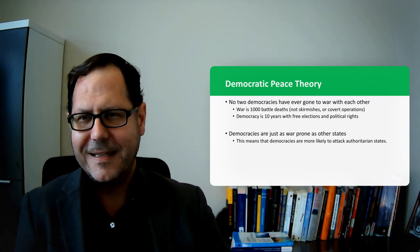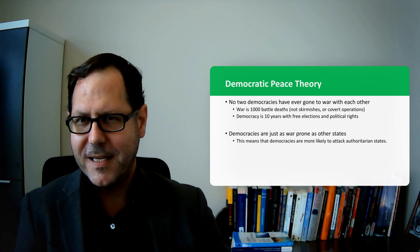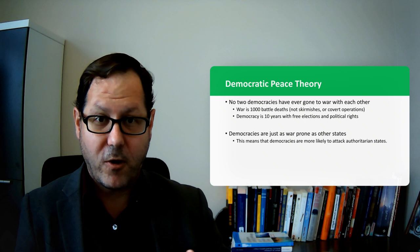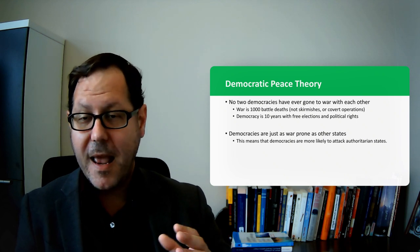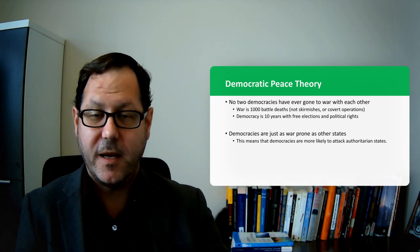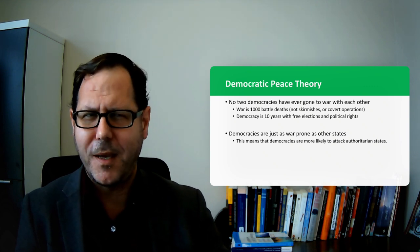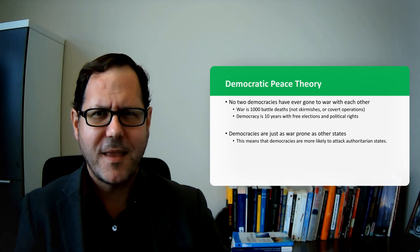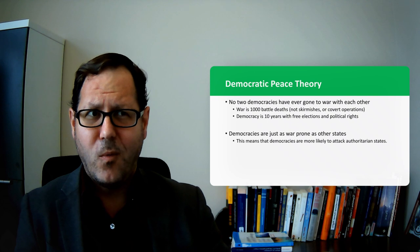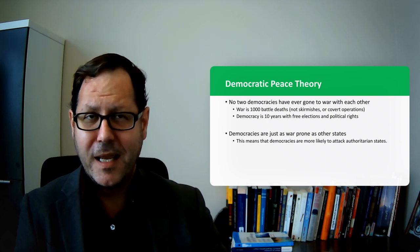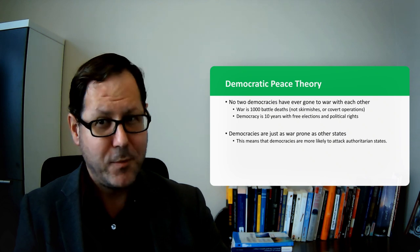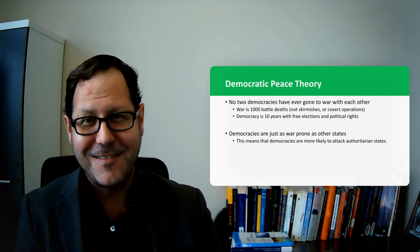And then the other criteria relates to how we measure democracy, which typically is free and fair elections and to be able to sustain that for a period of about 10 years. That 10-year threshold ends up being really important for our empirical law, because I think India and Pakistan fought the Kargil War in 1999, when Pakistan had been a democracy for about nine years and eight months. So it was really close for that particular example.